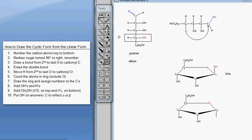Alpha, they are trans. So my OH on my anomeric carbon and my CH2OH are on opposite sides of the ring. They are trans, so that is alpha.